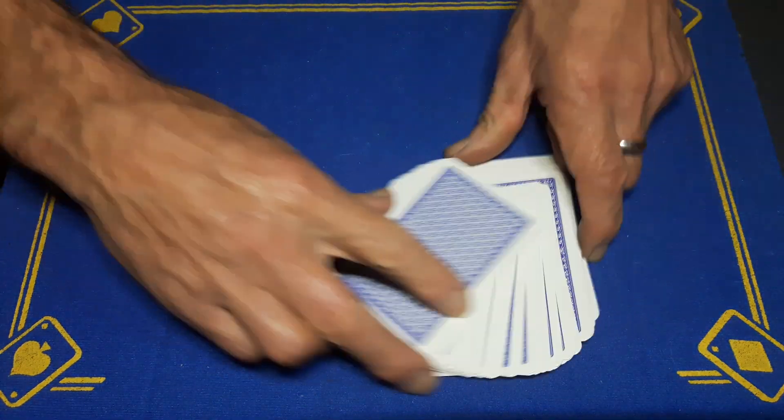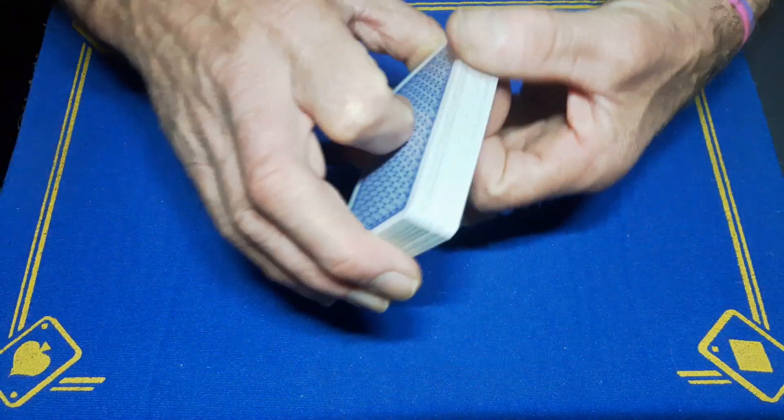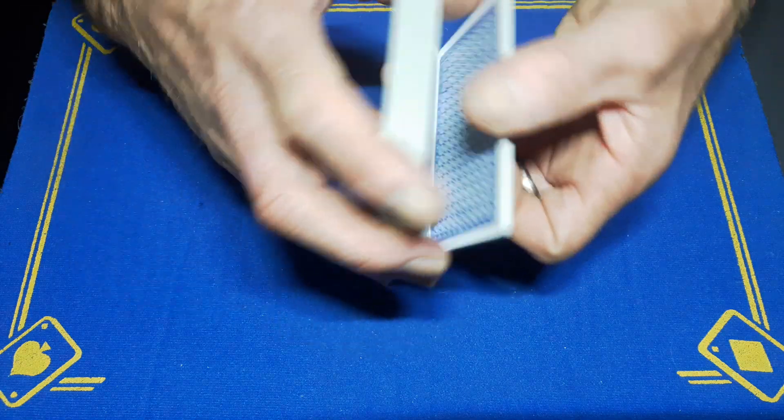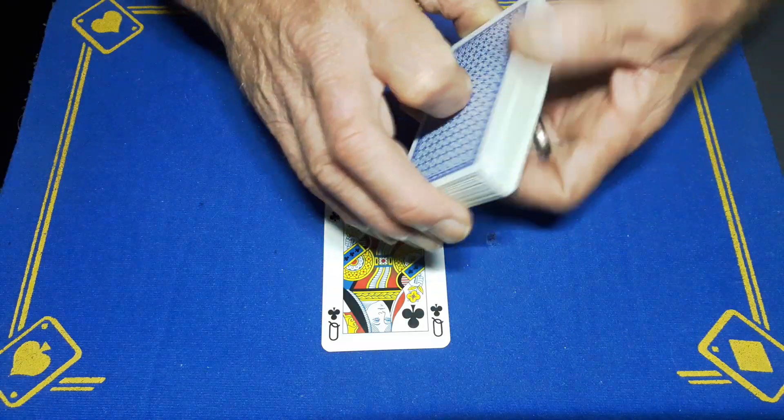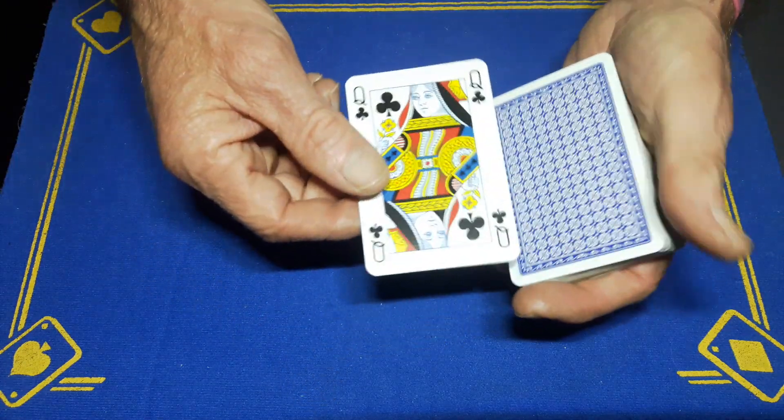The spectator has a free choice to pick any card except for one of these on the bottom. So let's say they have this one - in this case it's the Queen of Clubs. You're simply going to place this Queen on the top and cut it into the deck.